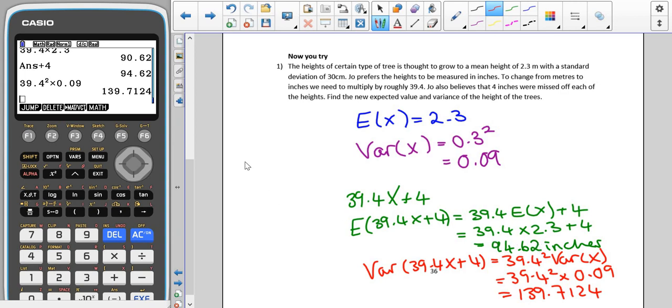For our variance, the variance of 39.4X plus 4 is the same as 39.4 squared var of X, which is the same as 39.4 squared times 0.09, which ends up giving us 139.7124.